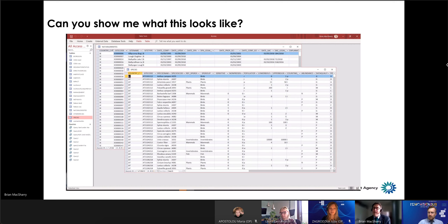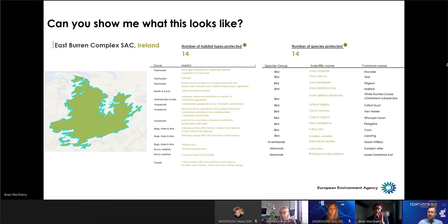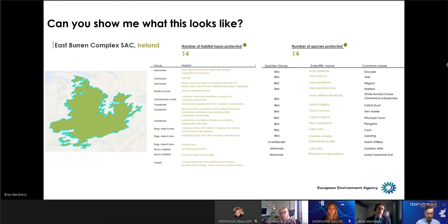If I zoom into that site I showed you — one of my favourite areas in Europe called a Burren in the west of Ireland — it tells you the list of habitat types: freshwater, grasslands, bogs, mires, and rocky habitats, with technical names for each. It also tells you there are 14 species protected here — you can see many bird species with their Latin and common names, plus two mammal species and invertebrate species. This is really what the database tells you: how many habitats and species are protected at a given site.